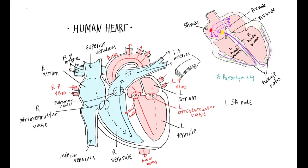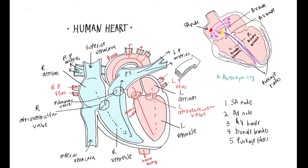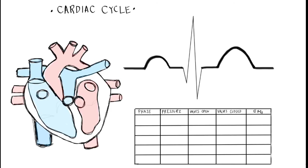So the signal starts with the SA node, then the AV node, then the AV bundle, followed by the bundle branches, and lastly the Purkinje fibers. Now that we have a better understanding of the heart's anatomy and electrical activity, let's take a look at the cardiac cycle.